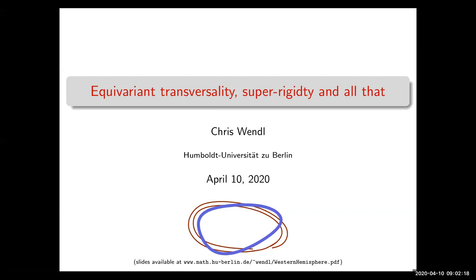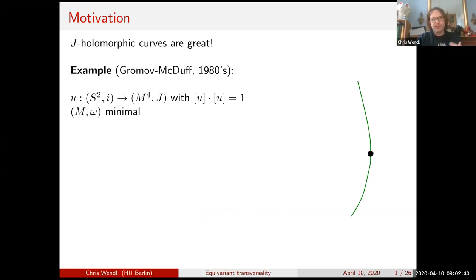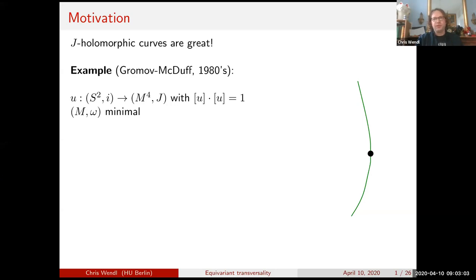Let me start with a bit of motivation. J-holomorphic curves are great things — something I feel strongly about. This becomes an incontrovertible statement when you look at early results by Gromov and McDuff. This was first sketched in Gromov's 1985 paper: suppose you have a symplectic four-manifold, you don't know what it is except it's symplectically minimal — not a blow-up — and it contains a symplectically embedded sphere with self-intersection one.